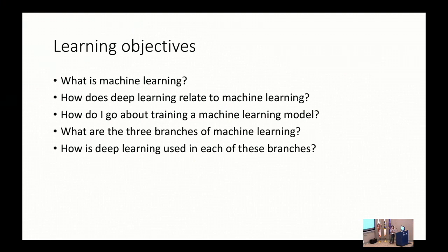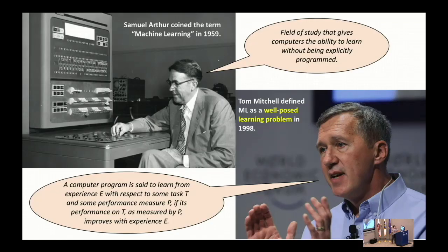These are the learning objectives. Hopefully after the end of my talk, you'll be able to answer questions like: what is machine learning? What's the relationship between deep learning, machine learning, and AI? So, what does the term machine learning even come from? It actually came from 1959, when Arthur Samuel coined the term machine learning as the field of study that gives computers the ability to learn without being explicitly programmed.